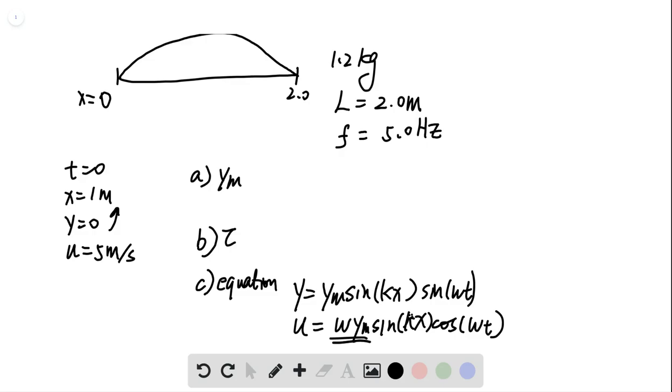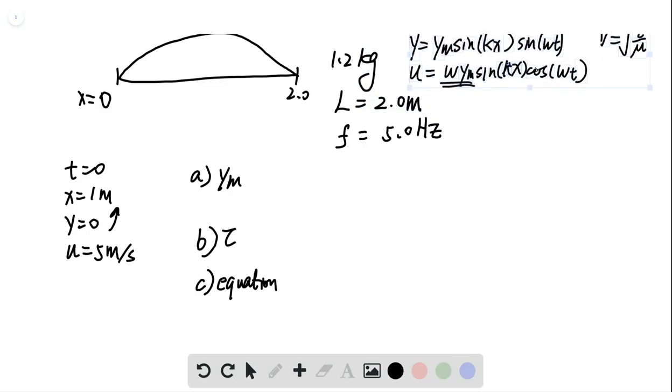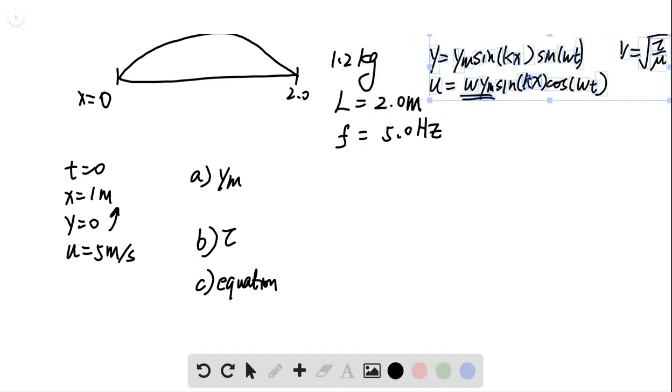So the wave speed v equals square root of tau over mu. All right, so I think these are all the information we will need for this question. I will put everything up in this corner so that we can refer back to it.